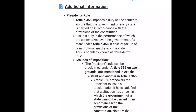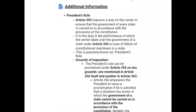Additional information: President's Rule can be proclaimed under Article 356 on two grounds — one mentioned in Article 356 itself and another in Article 365 — when the government of a state cannot be carried on in accordance with the provisions of the Constitution.